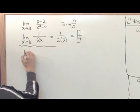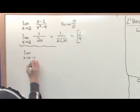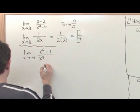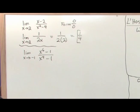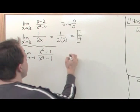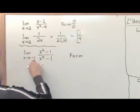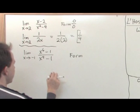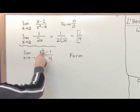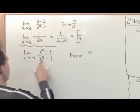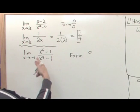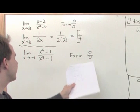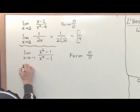Next problem: the limit as x approaches negative one of (x to the sixth power minus one) over (x to the fourth power minus one). First, plug in negative one. Negative one to the sixth power is one (even power), so one minus one is zero on top. On the bottom, negative one to the fourth power is also one, and one minus one is zero. So again we have the zero over zero form, and we can use L'Hopital's Rule.